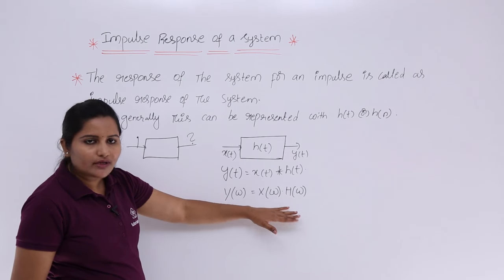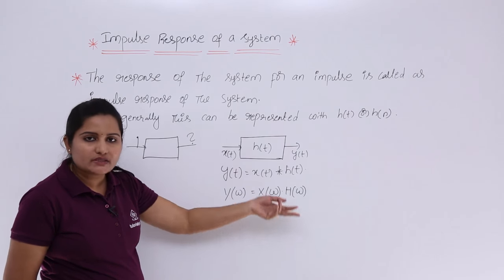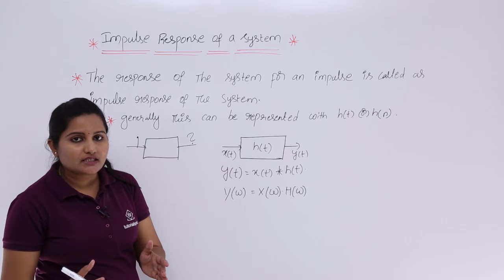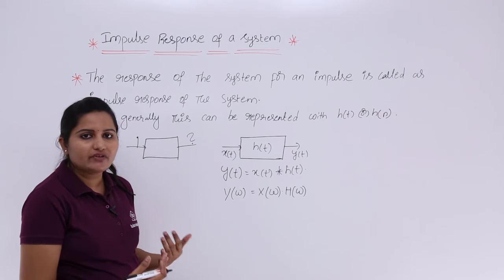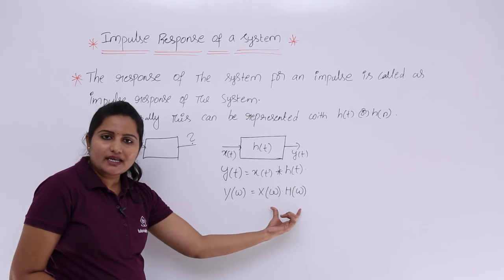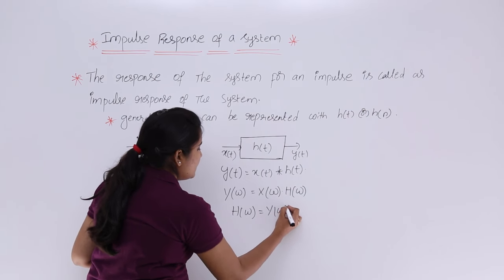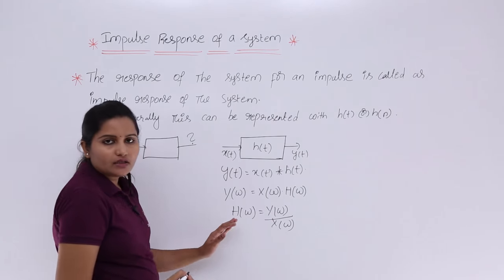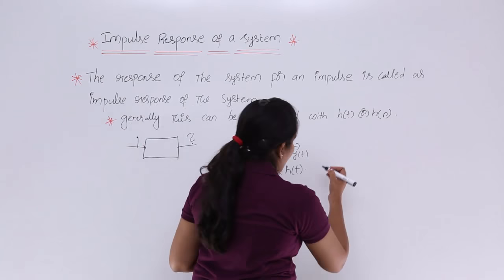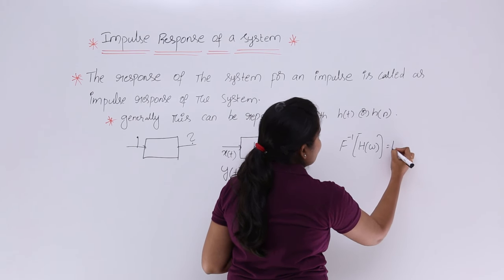Now if you want to calculate h(t) — for example, in exams they will provide both an input signal and an output response and ask for the impulse response — from the frequency domain relation, H(ω) = Y(ω) / X(ω). Then, taking the inverse Fourier transform of H(ω) gives you h(t), which is the impulse response.